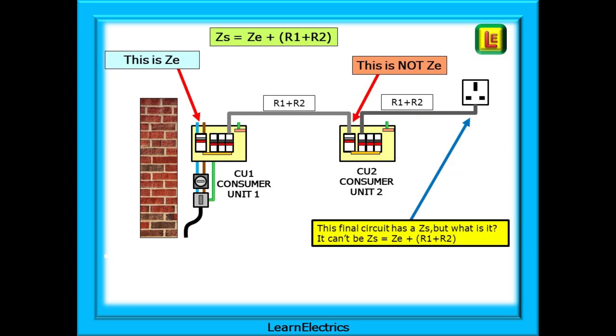ZS is ZE plus R1 plus R2. But now we have two circuit cables, each with their own resistance value. ZE is way back at the incoming position at the main switch of CU1. So the main switch of CU2 cannot be ZE as well. And ZS is used for the end of the circuit, and CU2 is in the middle of two circuit cables. So what can we do?